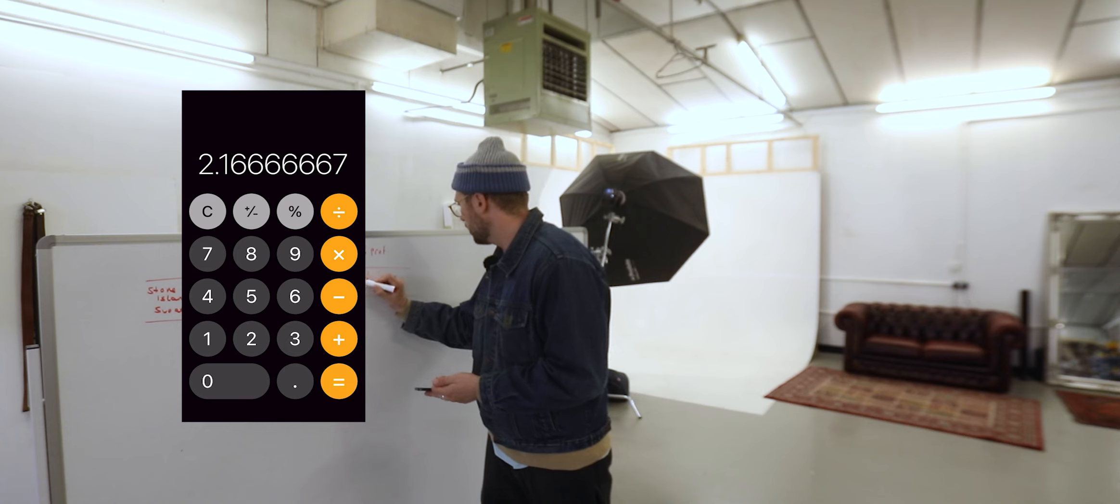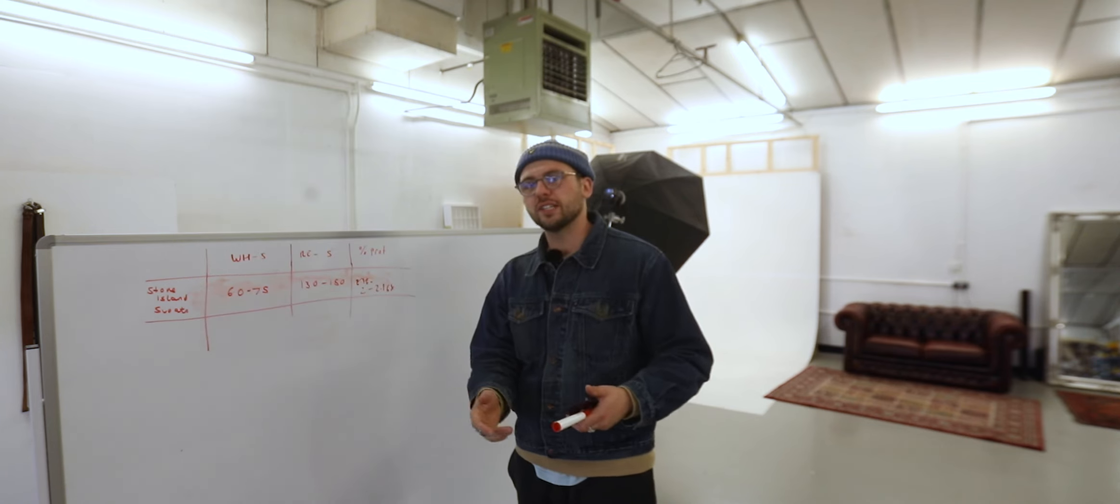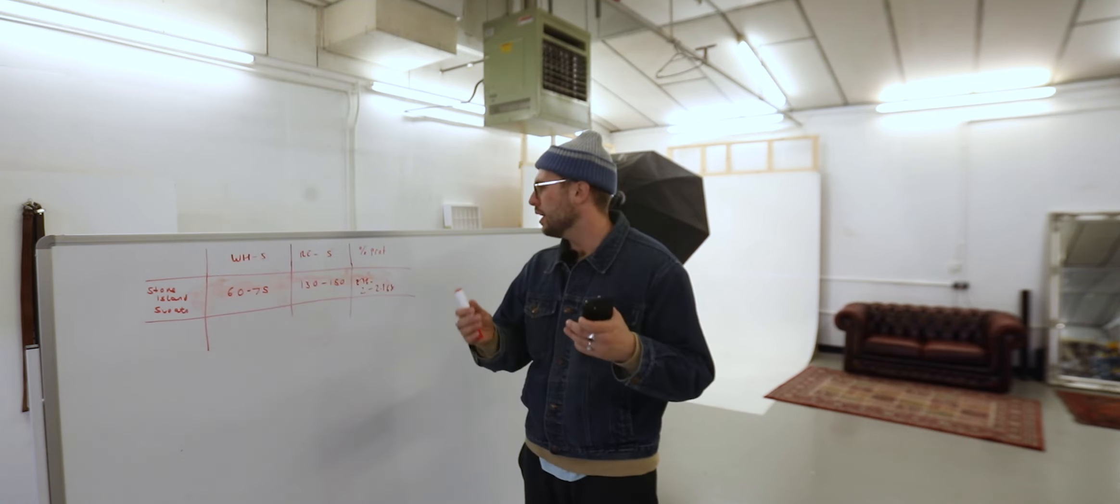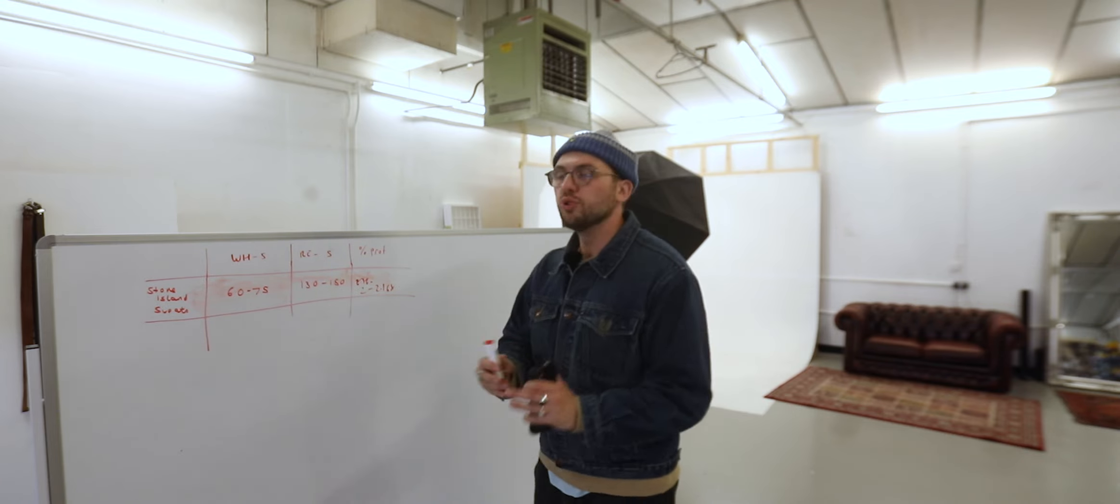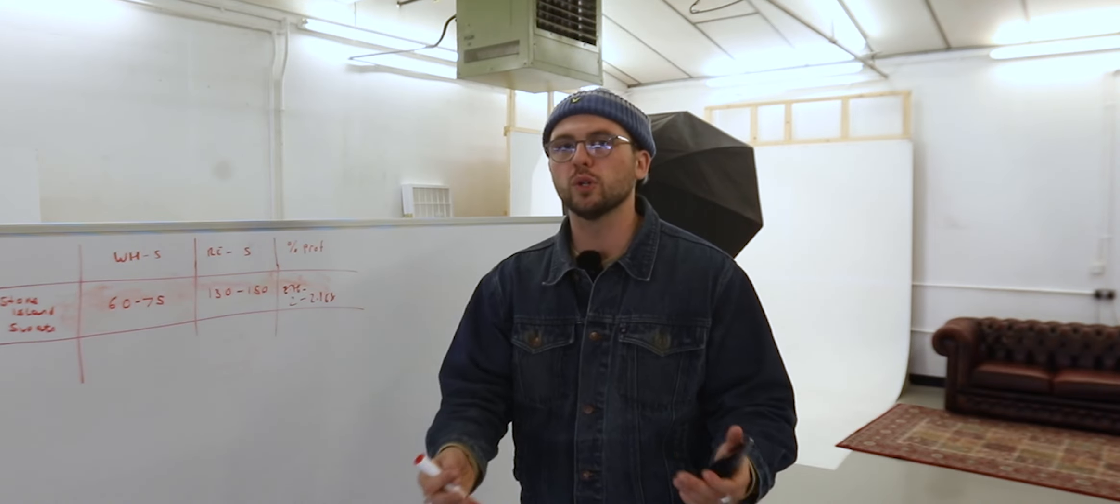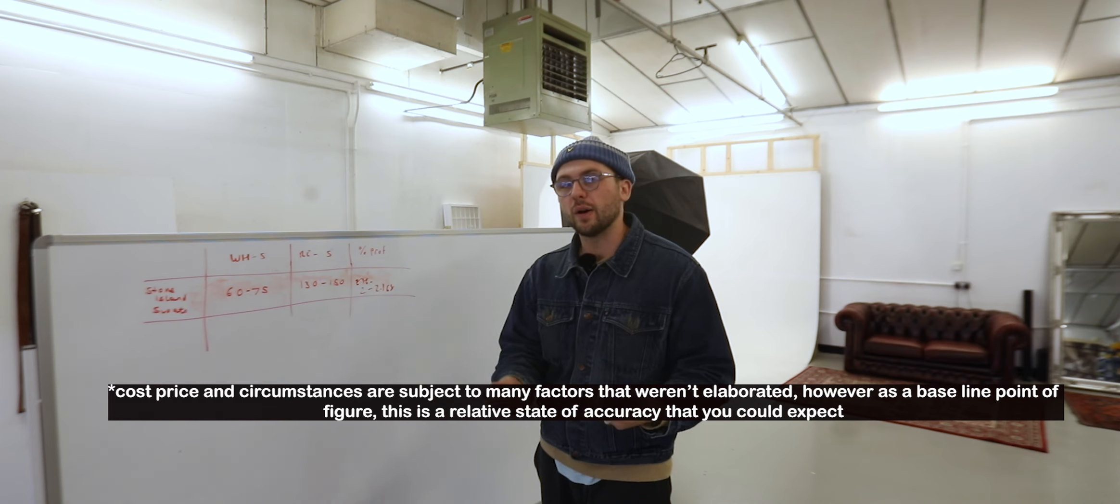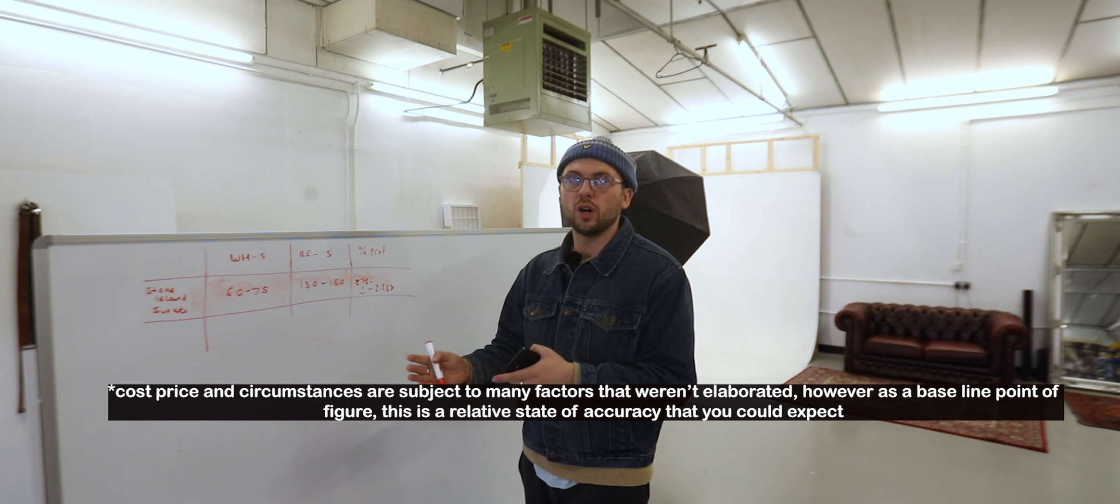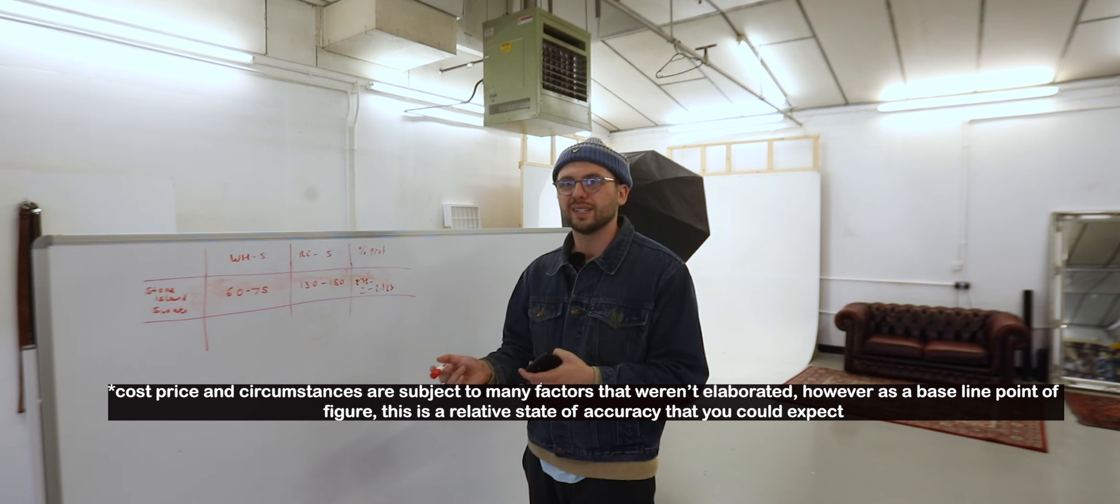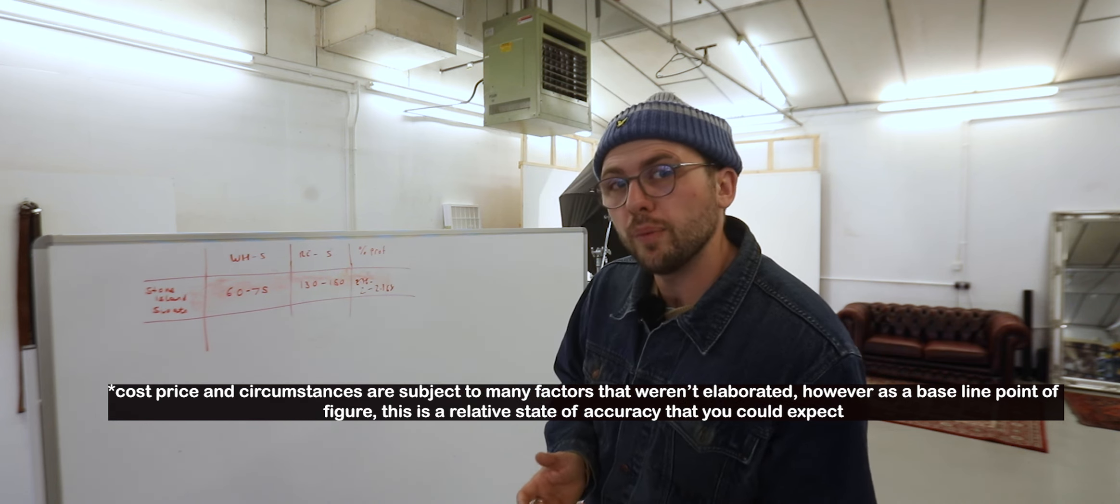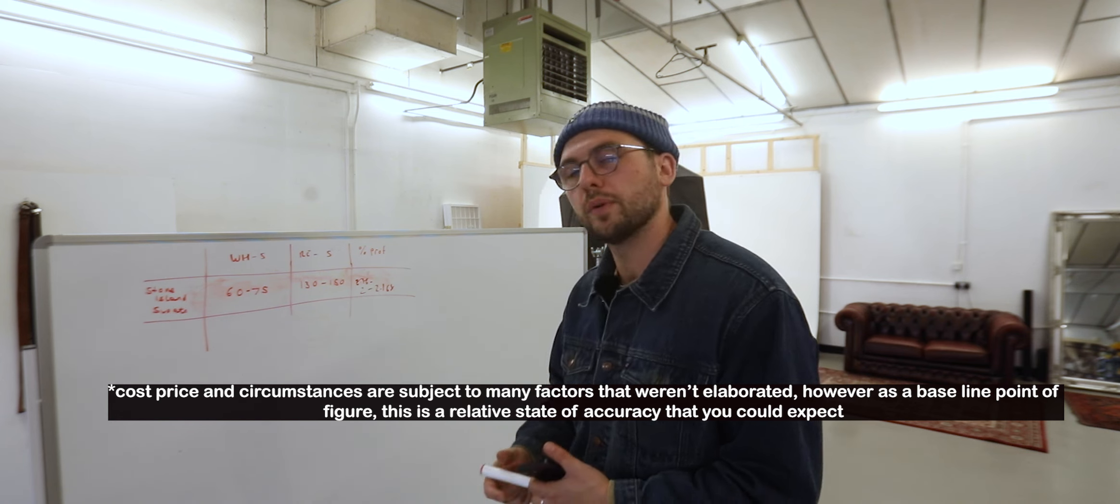If you were to buy a Stone Island sweatshirt for 60 pounds at wholesale and resell it for between 130 and 150, roughly your percentage profit before taking insertion fees on websites and stuff like that, the return on that would be around about 2 to 2.1 times rate on return. A 2X. And if I'm honest, I think you can do better. So let me break things down and show you a bit more.